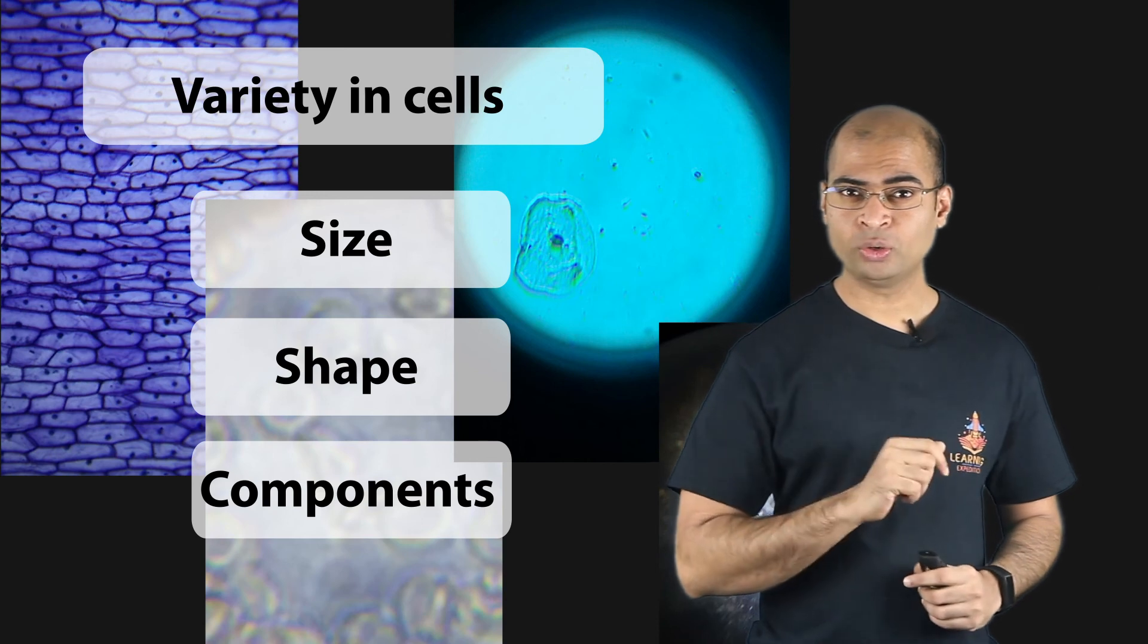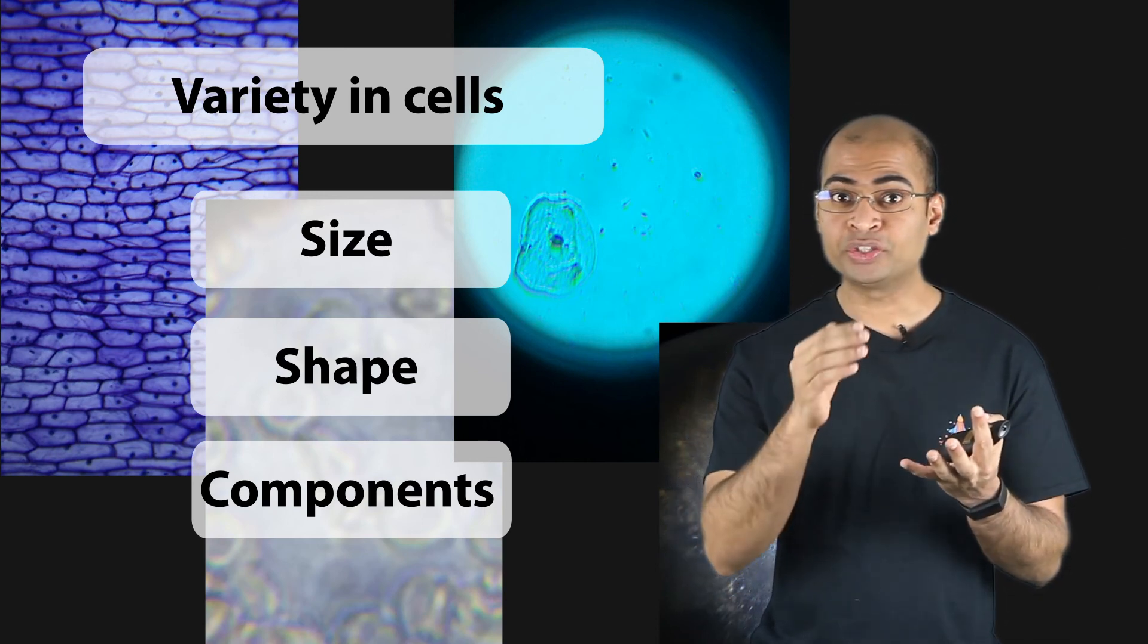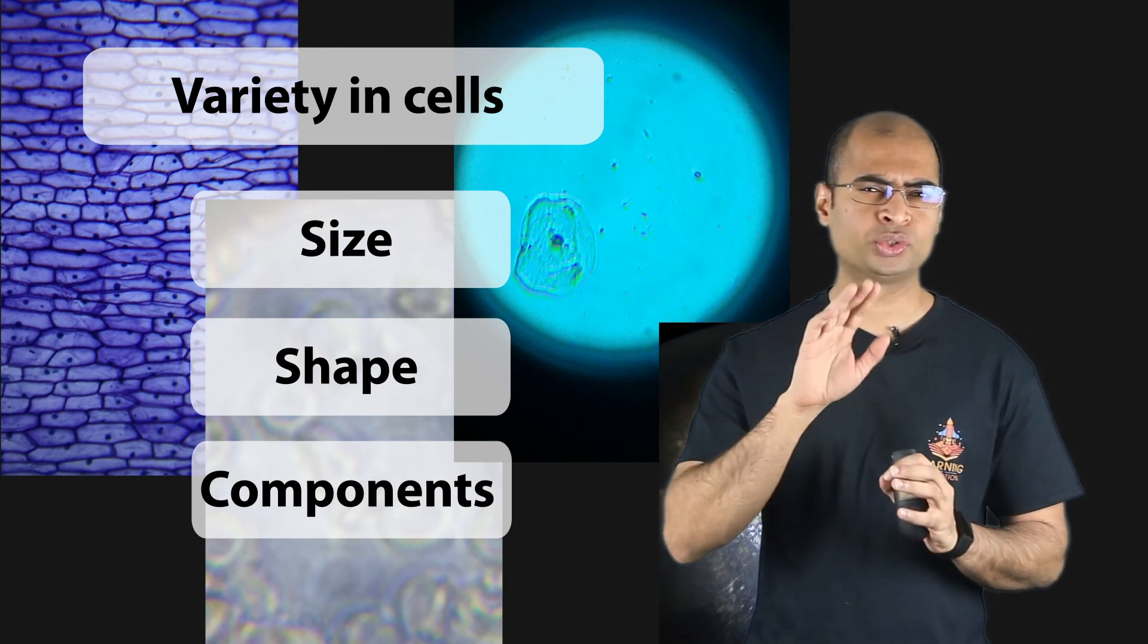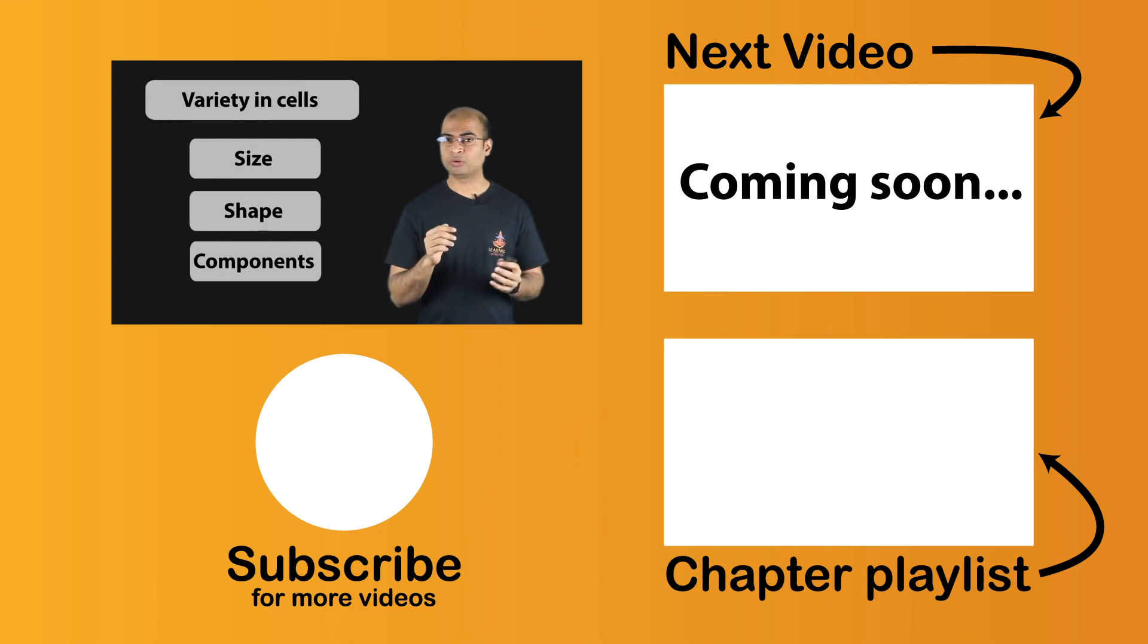So, in the next video, we will look at why this variety and specially in the shape of the cell is so important. But meanwhile, if you want to see more examples of cells under the microscope, just let us know in the comments down below and we'll get those for you. See ya!